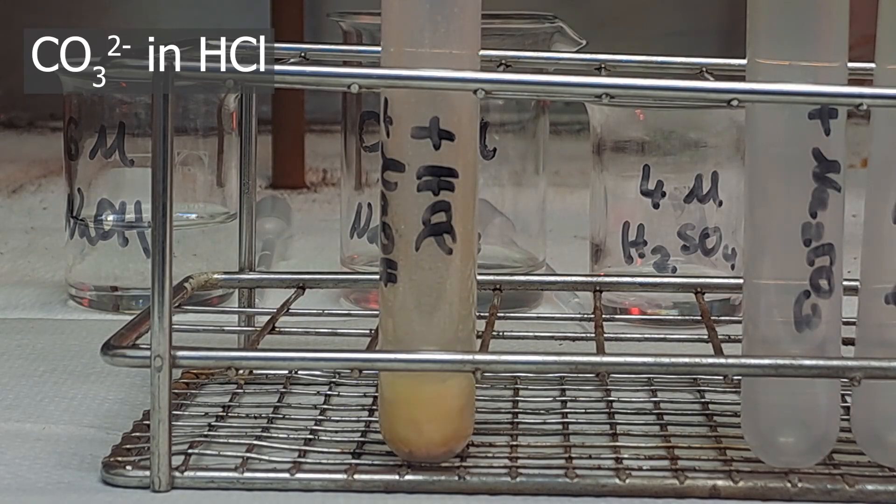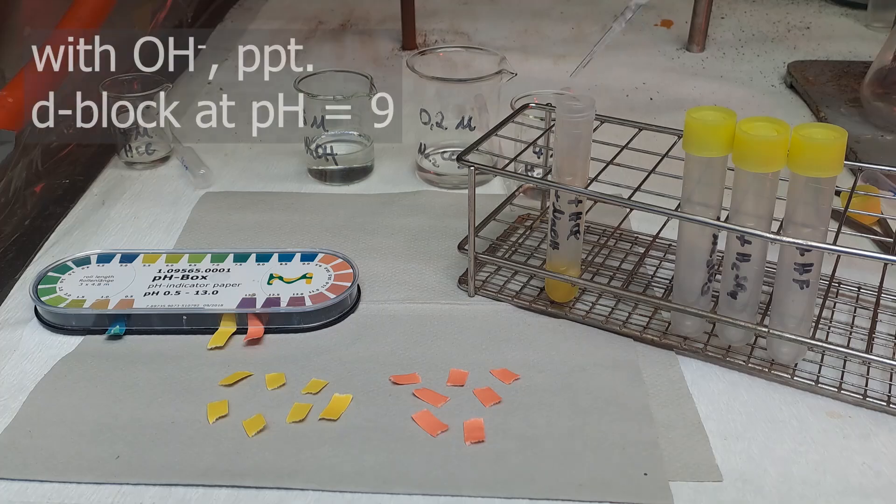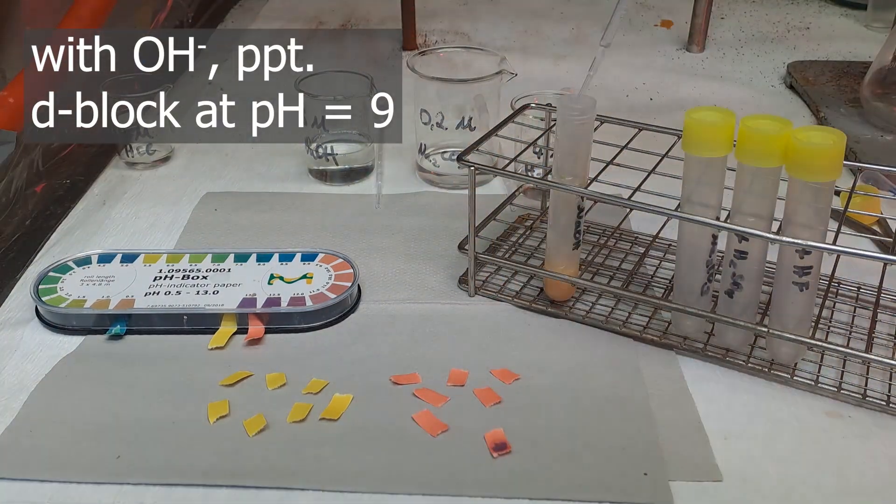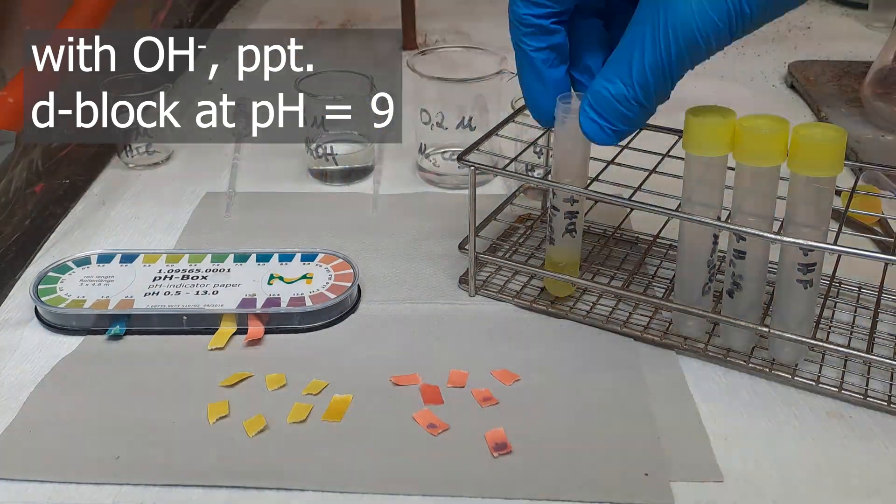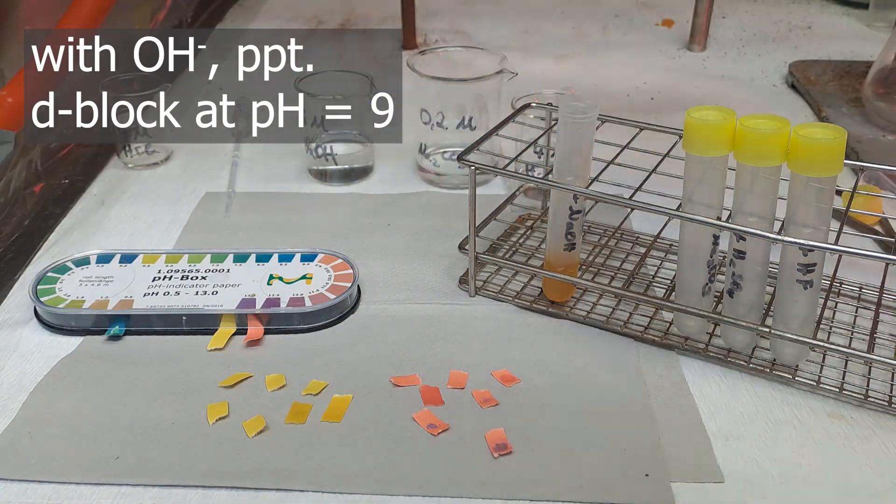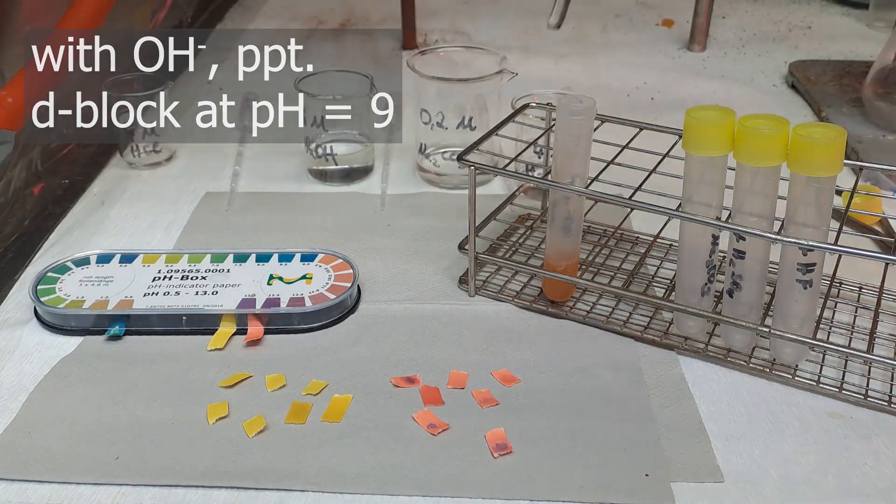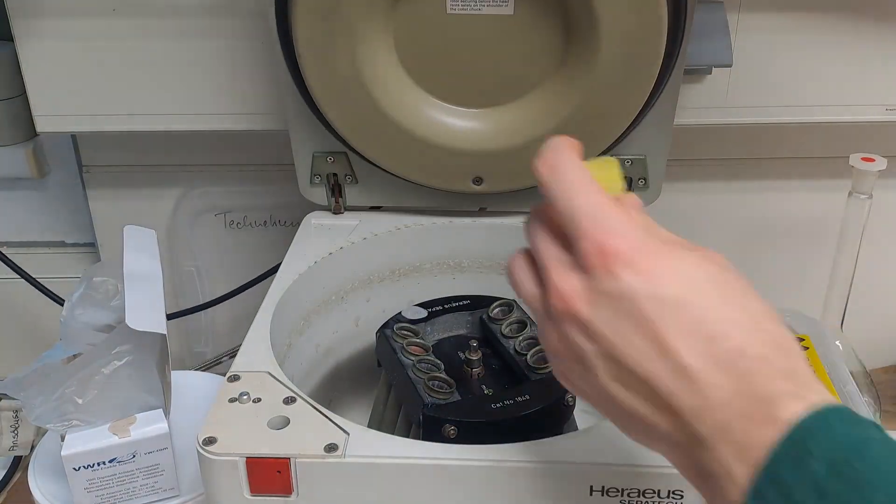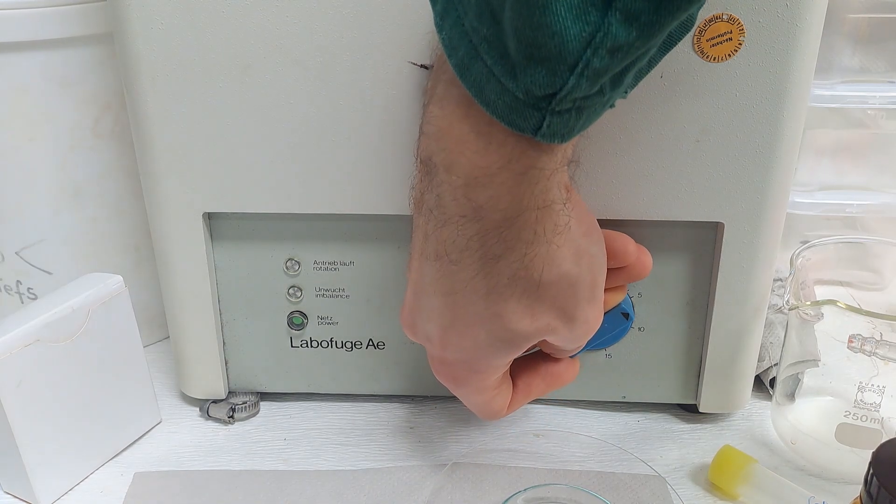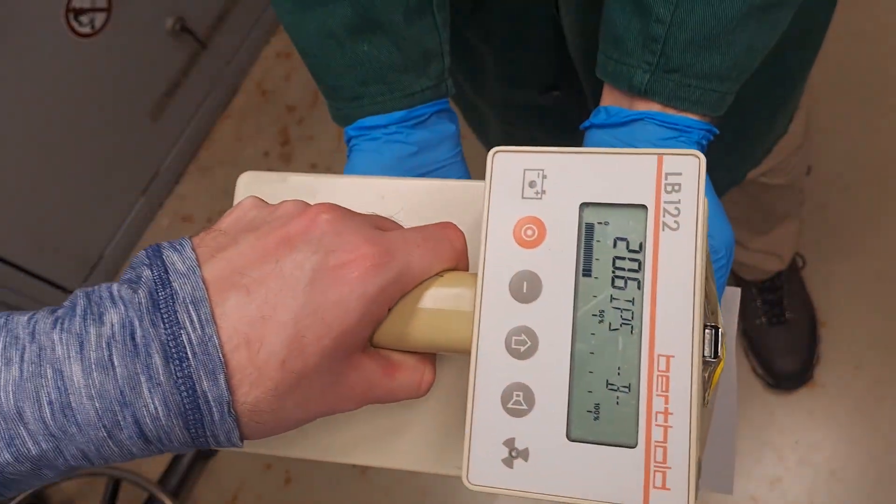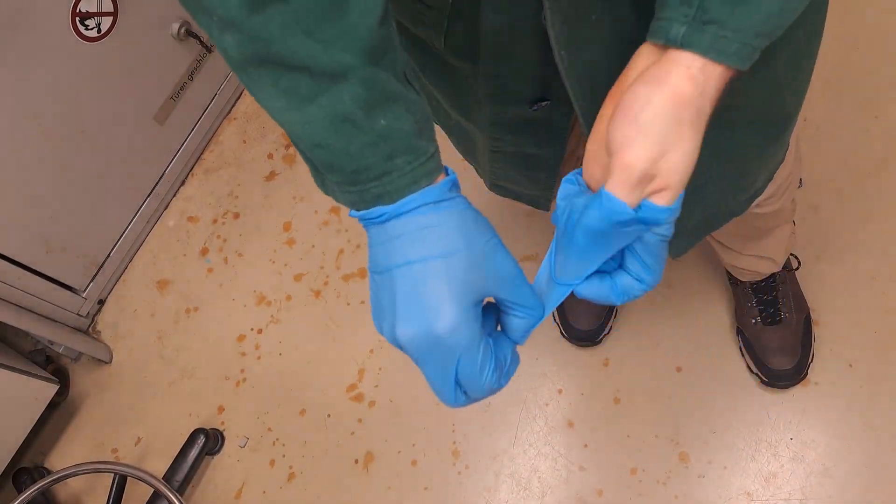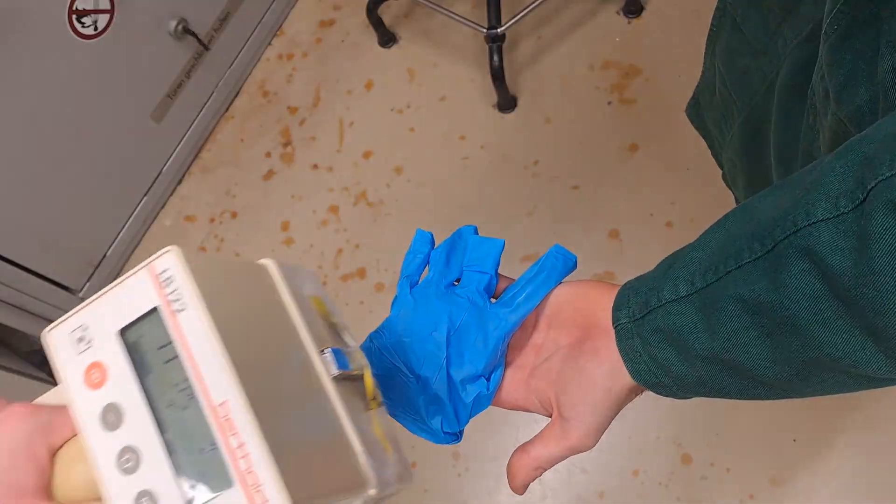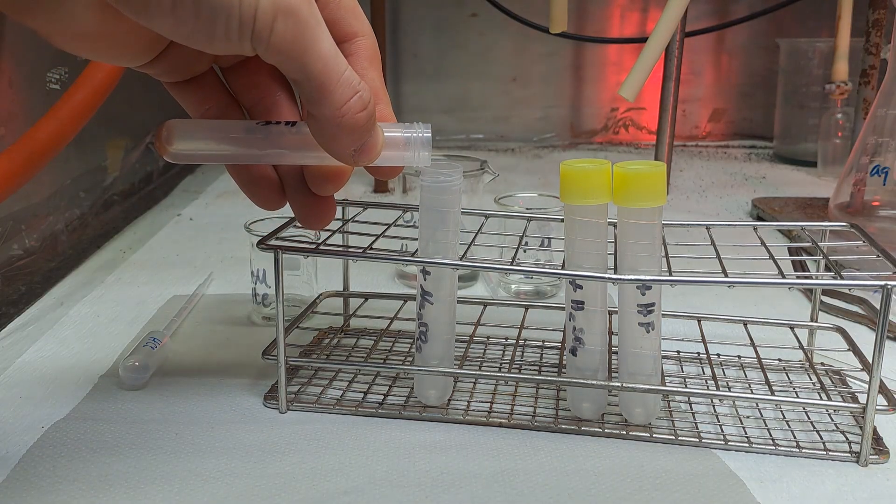A pH of 9 should be achieved during this step. If the solution is too basic, calcium would also precipitate as calcium hydroxide. Therefore, pH paper is consistently checked and adjusted drop by drop with hydrochloric acid or sodium hydroxide solution. Then into the centrifuge with a counterweight, 3000 RPM for 5 minutes should be enough. In the meantime, the pH paper can also be disposed of. Everything is measured before throwing it away. If it's not contaminated, the paper snippets can be collected into a nitrile glove and be thrown out in the non-active flammable waste.